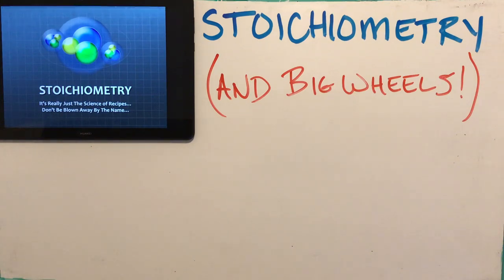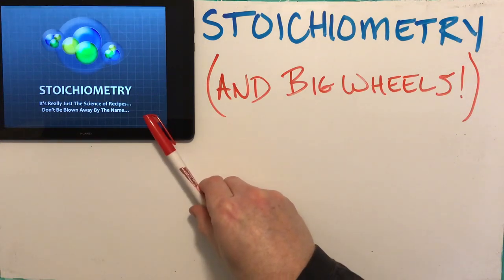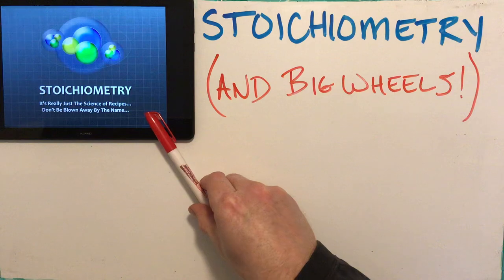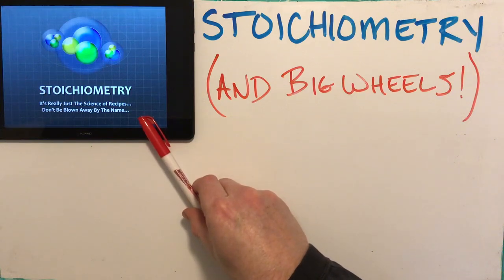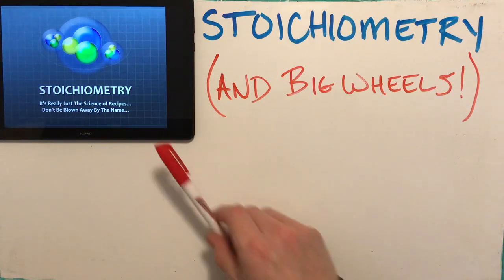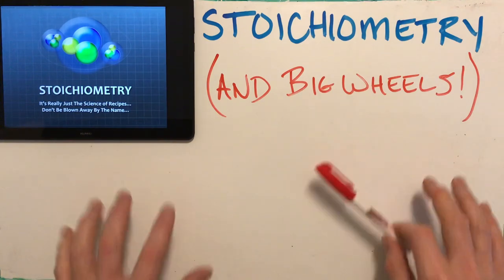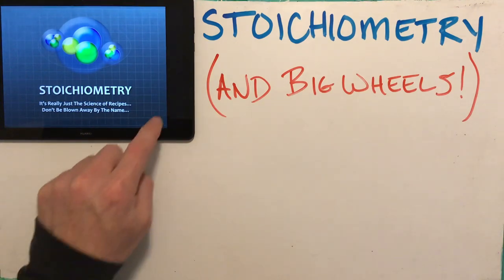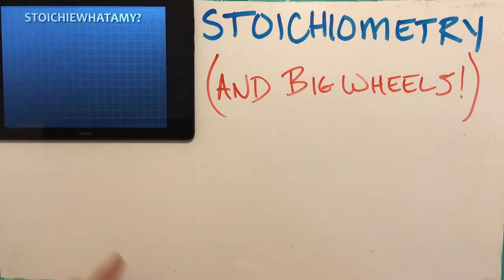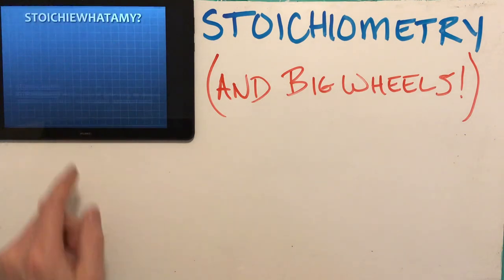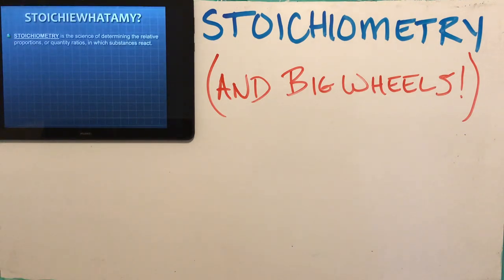As the title here of the slide suggests, this PowerPoint is brand new — it's on your D2L page for the course, just made it up this morning. So I'm going to be going through this and doing some work on here as well. Stoichiometry is a science of determining the relative proportions or quantity ratios in which substances react.